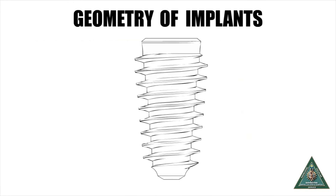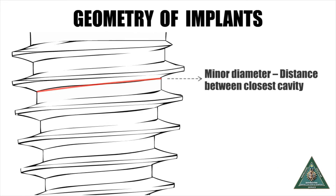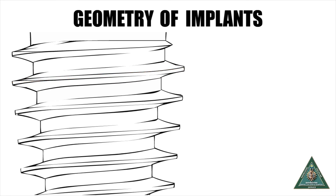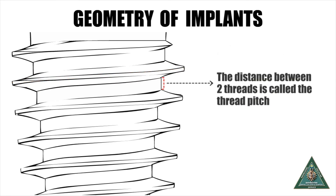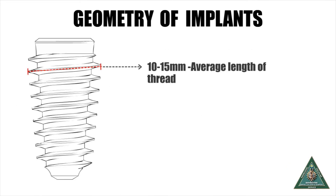The body of implants has threads which can be continuous or interrupted. The geometry of implants is manufactured with extreme precision. The width of the implant at the base of the thread is called the minor diameter, whereas the width at the apex is called the major diameter. The distance between two threads is called the thread pitch, which is usually 1 millimeter.